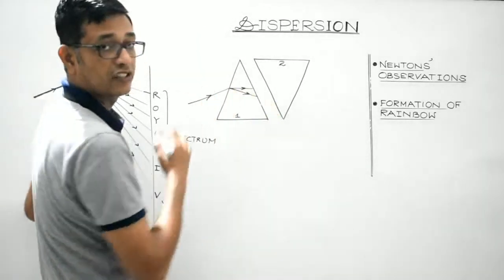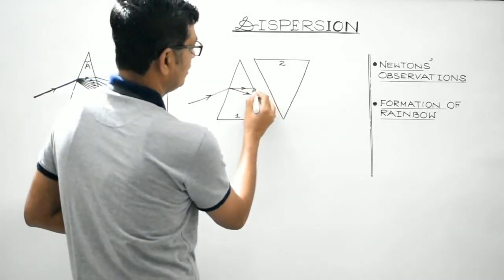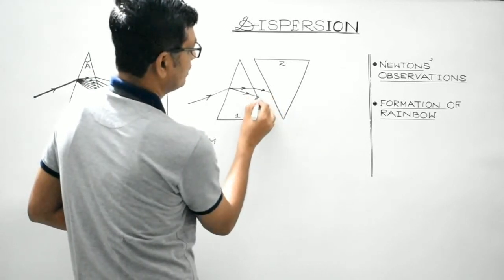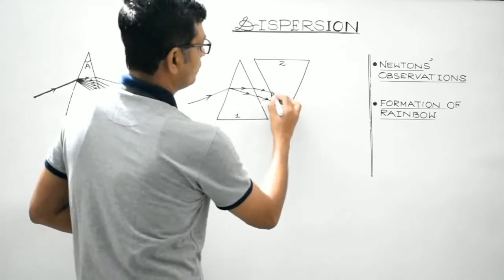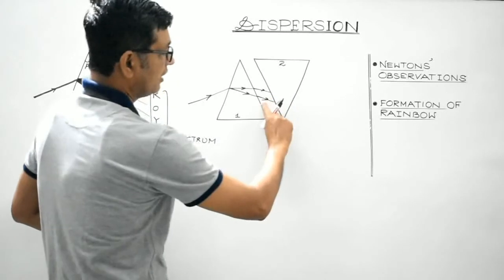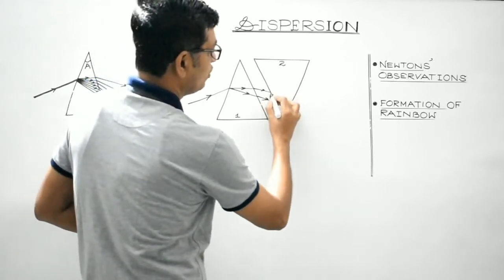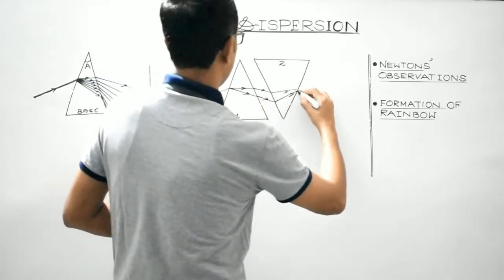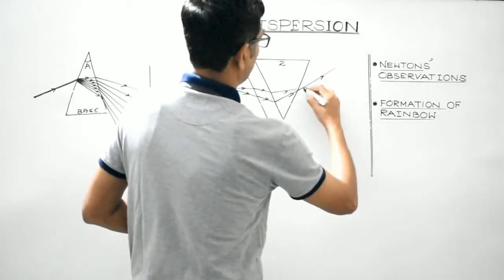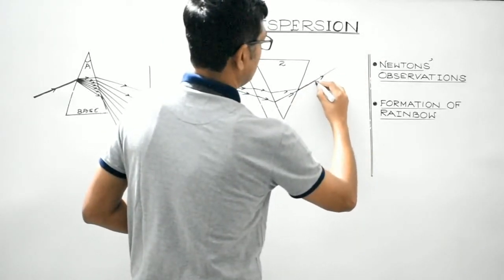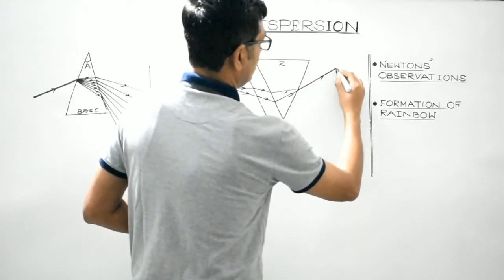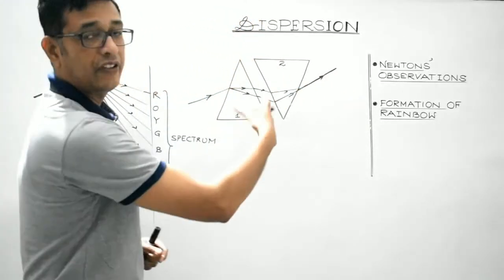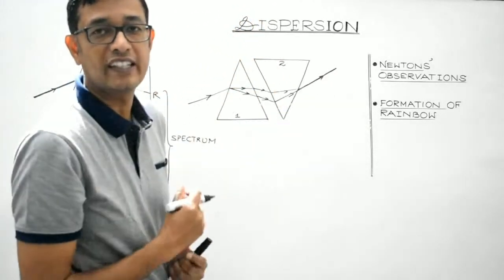Showing only violet and red. The ray enters the second prism, travelling from rare to denser — it bends towards the normal — and then emerges. What he obtained was white light emerging from the second face of the second prism.